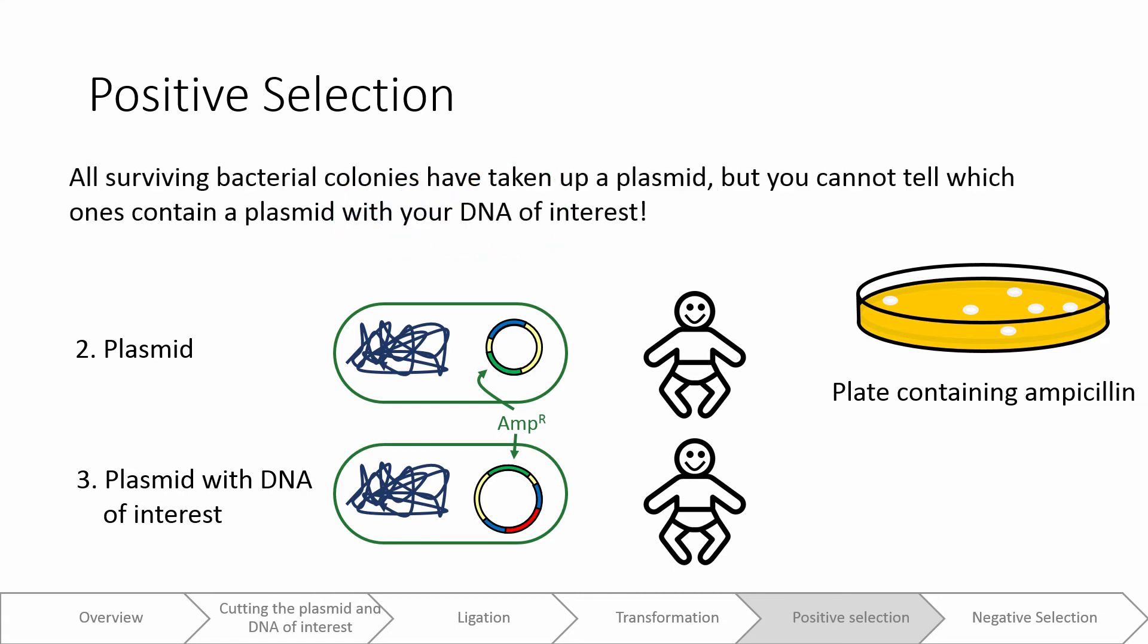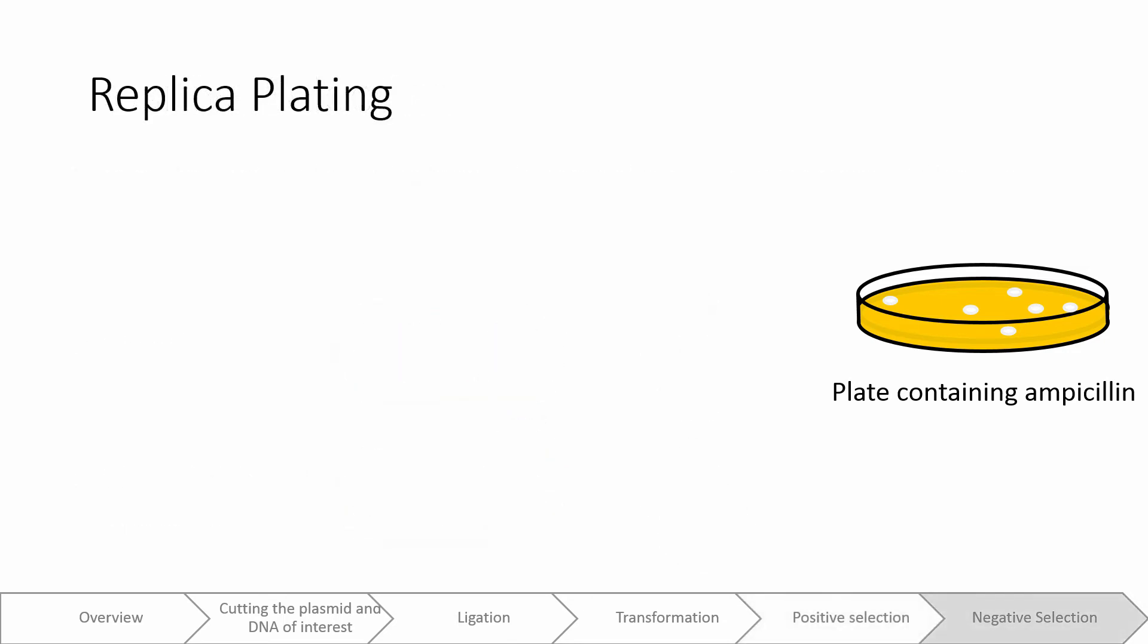Those that have taken up a plasmid survive due to the presence of the ampicillin resistance gene. Now, we know that the surviving E. coli have taken up a plasmid. However, some of the surviving bacterial colonies will contain an empty plasmid, while others will have our DNA of interest inserted. We are interested in the colonies that have our DNA of interest, but at this point, it's impossible to tell the difference between the two of them.